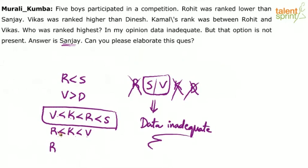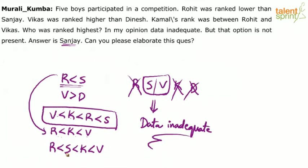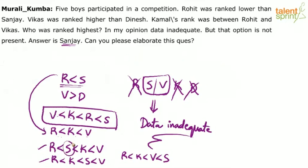But if we take the second possibility — Kamal's rank between Rohit and Vikas — and include the point that Rohit was ranked lower than Sanjay, then clubbing these two points we get: Rohit lower than Sanjay, then Kamal, then Vikas. Or Rohit lower than Kamal, lower than Sanjay, then Vikas. Or Rohit lower than Kamal and Vikas, lower than Sanjay. These are the three possibilities, and in two of these cases Sanjay is not the highest — only in one case does Sanjay become the highest. So the data is not very clear.